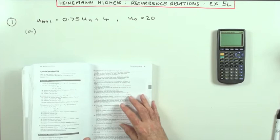Chapter 5, recurrence relations, exercise 5L mixed questions at the end.